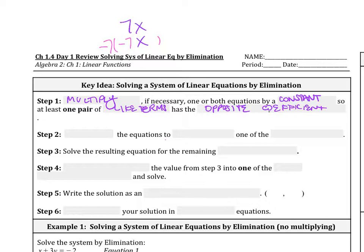Our goal is to get them to be the same terms, the same number, but just with opposite signs. So if we have a 7x, the opposite term is negative 7x. If we have a negative 3x, we want the other one to be a positive 3x.